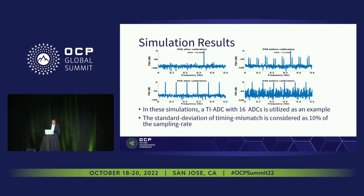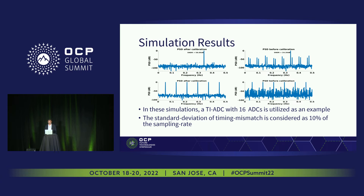Simulation results show that for a single tone without correction, 16 spurs appear due to timing mismatch and the SNDR is 24 dB. After calibration, the SNDR reaches close to 60 dB. For a multi-tone signal the signature is different but the improvement in performance is equally visible. This simulation assumes a 10% standard deviation of timing mismatch for 16 interleaved ADCs.